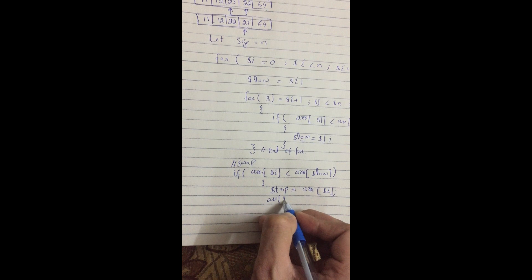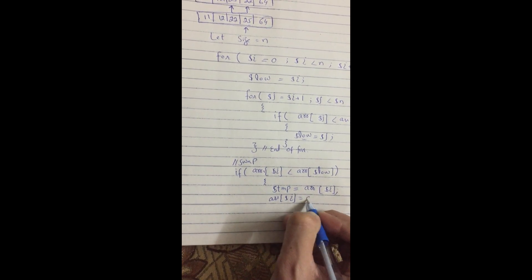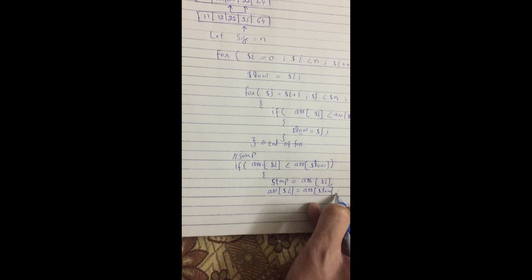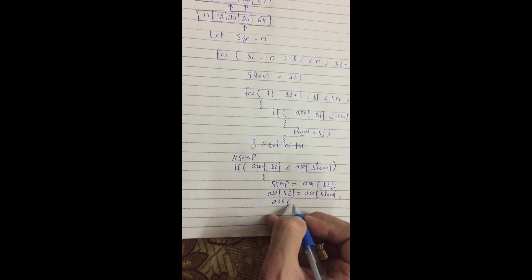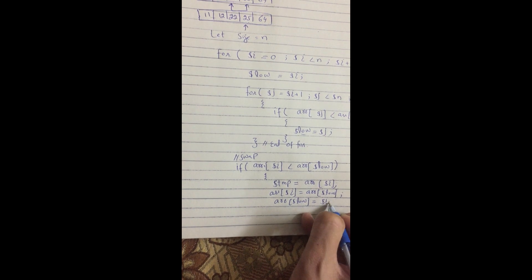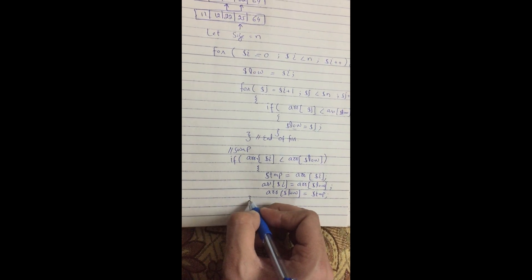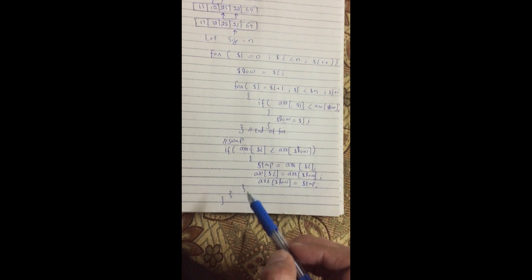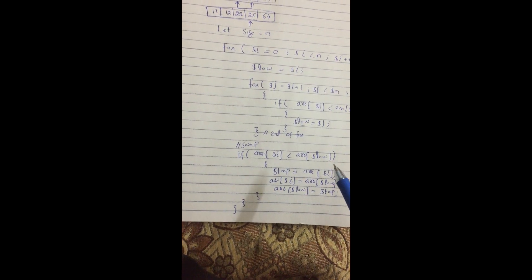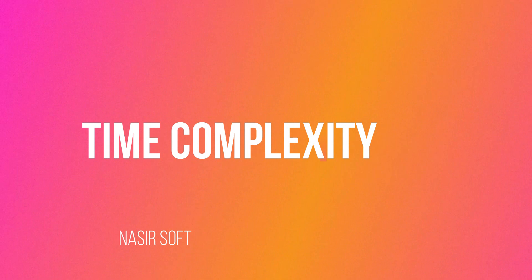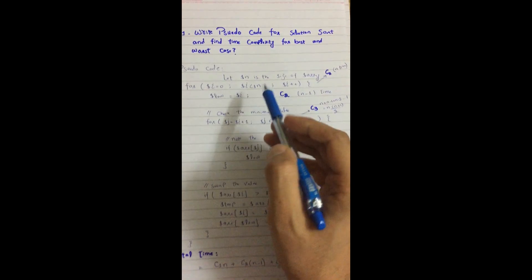To complete the swap: set array[i] = array[low], then set array[low] = temp. This exchanges the minimum element with the current counter position. After this code executes through all iterations, the array will be fully sorted. That is the complete code for selection sort.